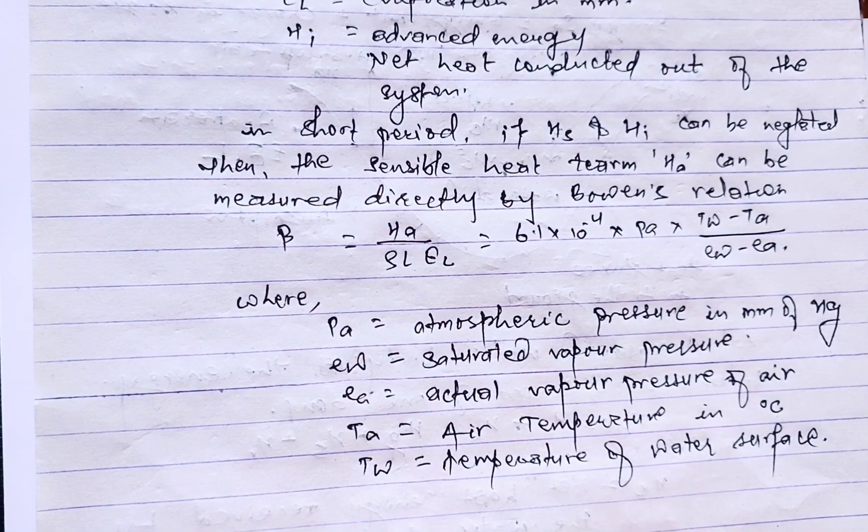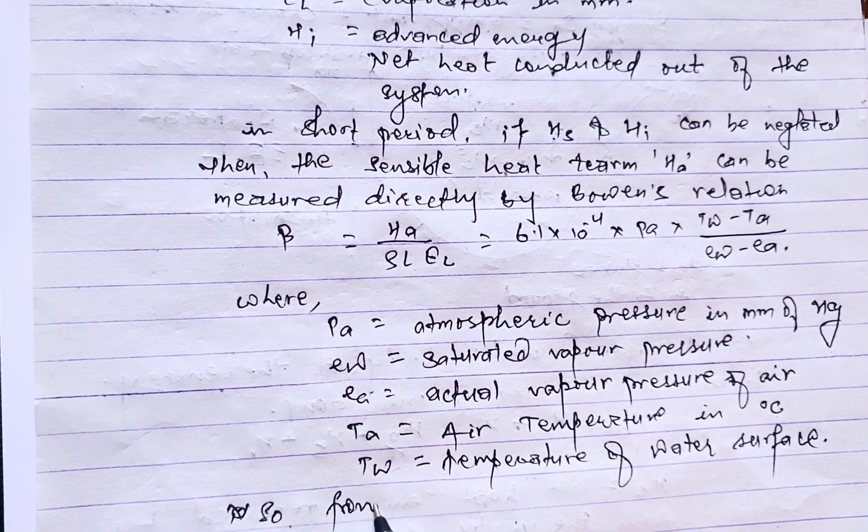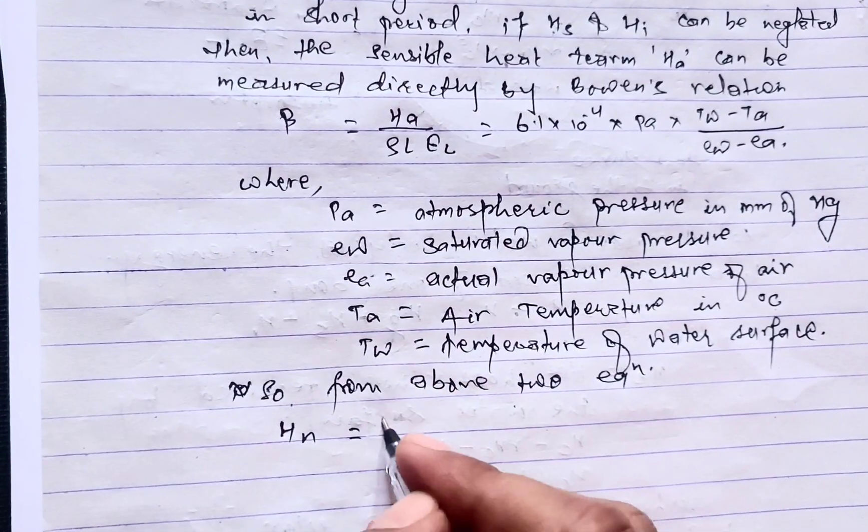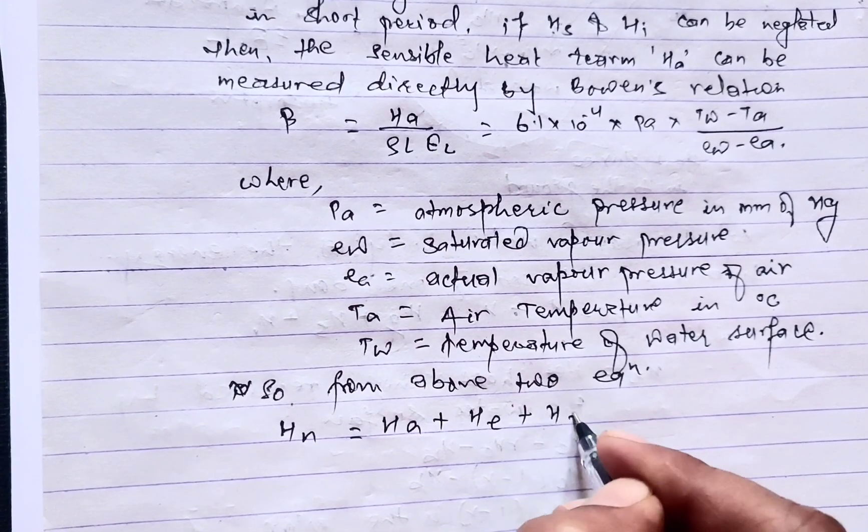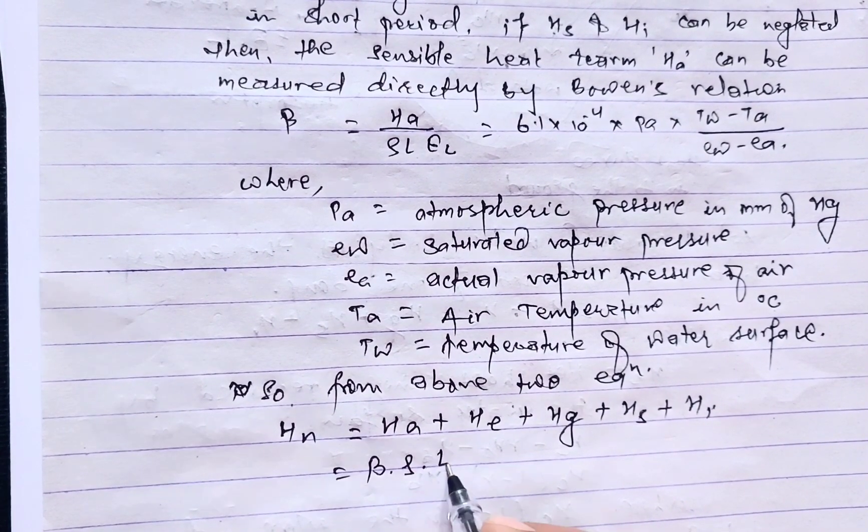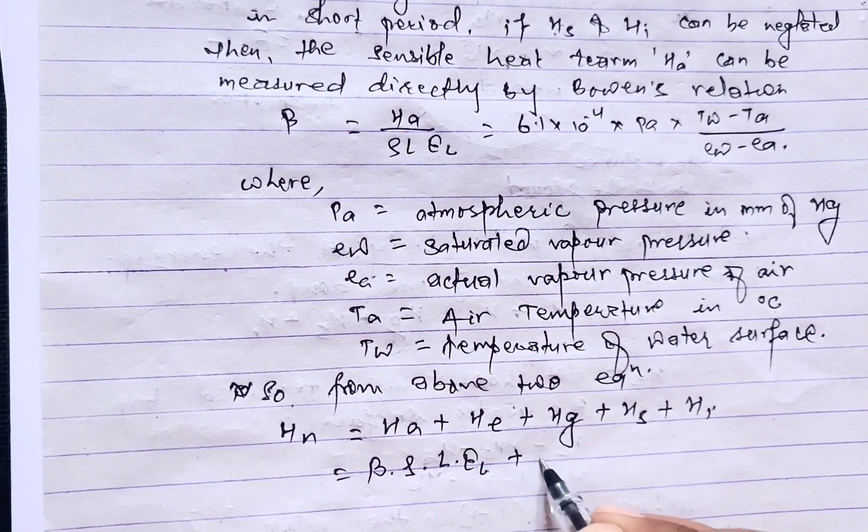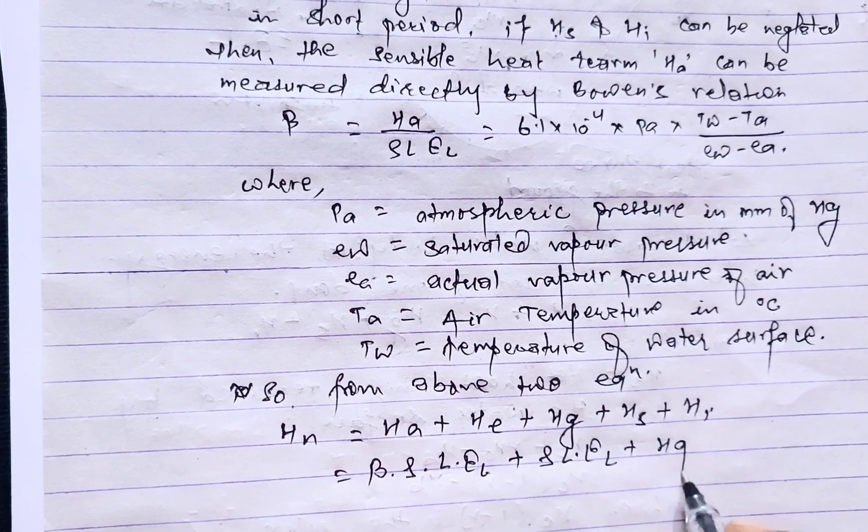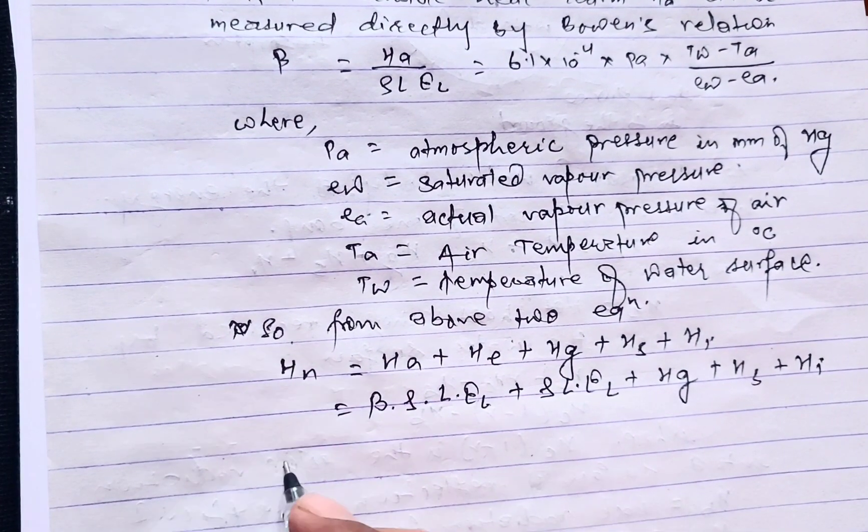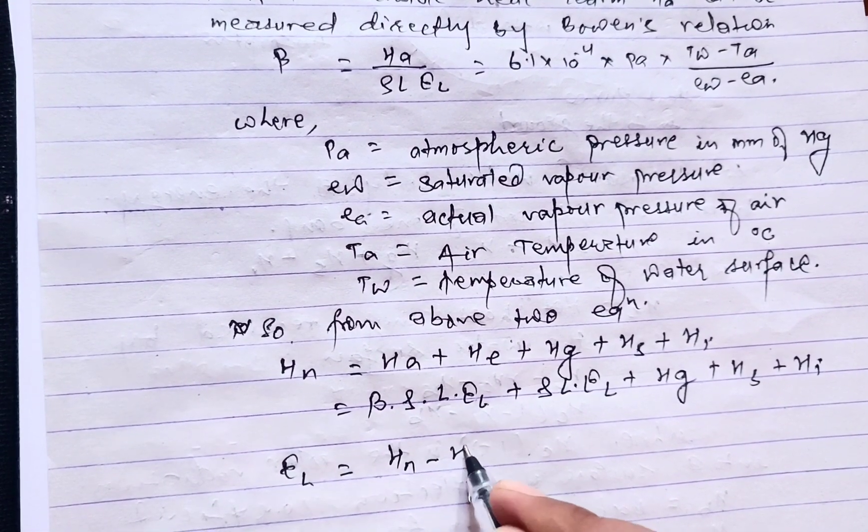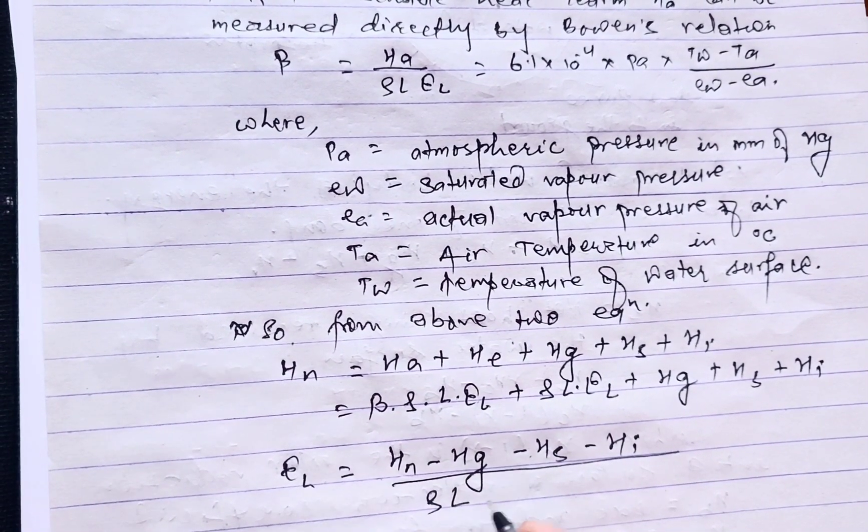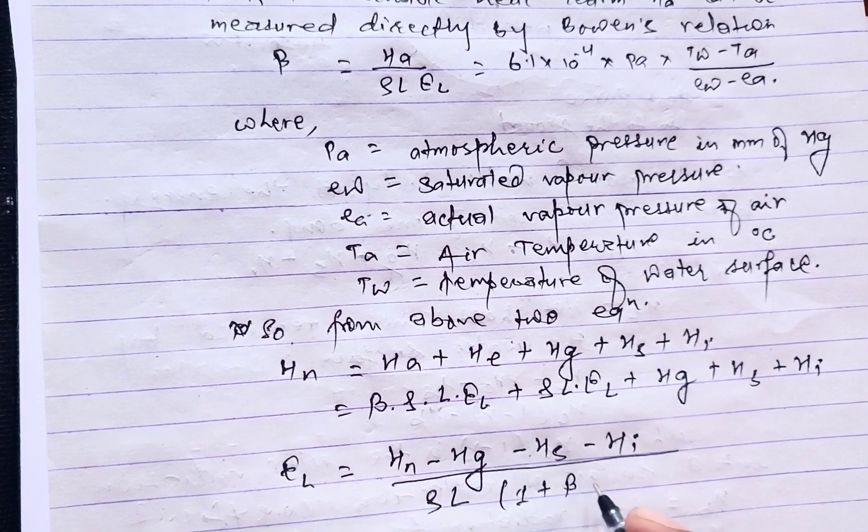So from above equations, Hn = Ha + He + Hg + Hs + Hi = β·ρ·L·EL + He + Hg + Hs + Hi. On solving this, EL = (Hn - Hg - Hs - Hi)/(ρL(1 + β)). This is the final requirement.